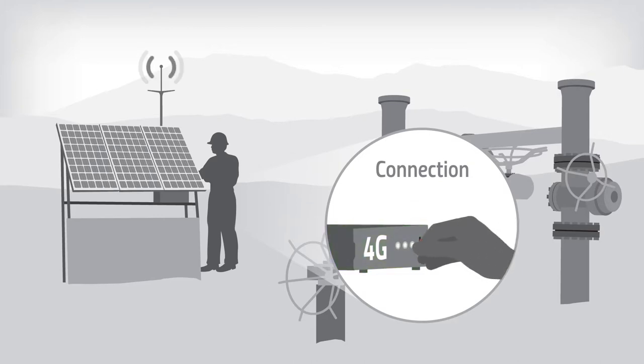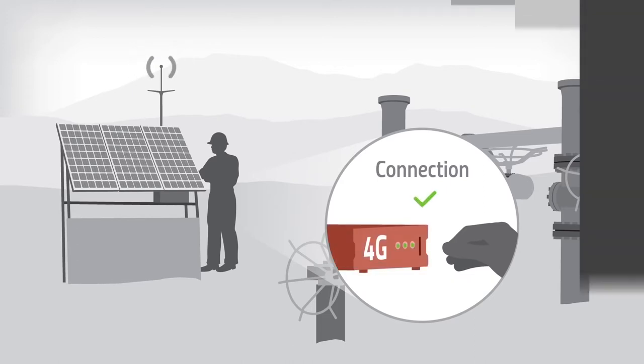With RV50's network operator switching, just insert the SIM and the gateway automatically configures itself.